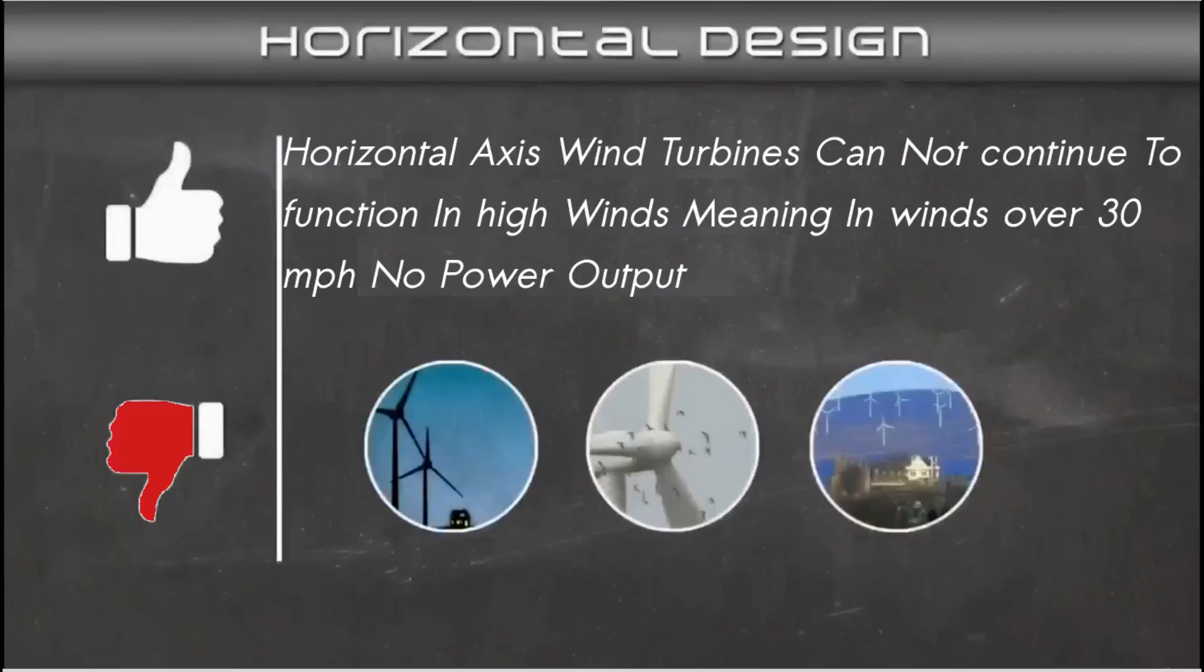This makes the potential output capacity lower than if the wind turbine could handle functioning in 80 miles per hour winds. Horizontal wind turbines waste the potential for high wind power generation.